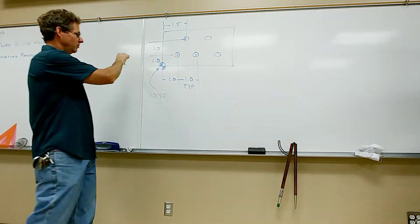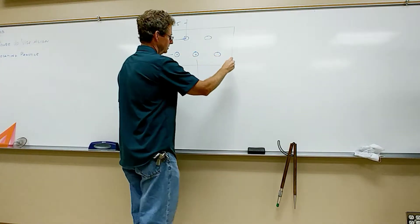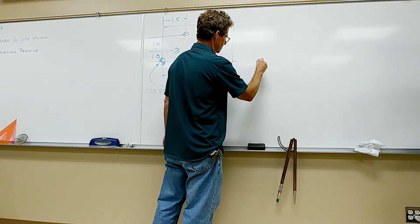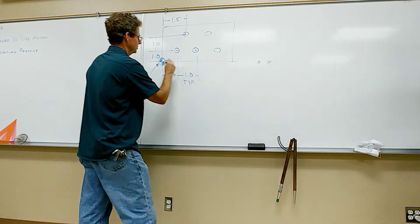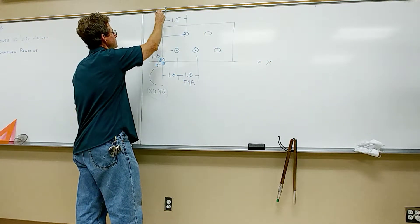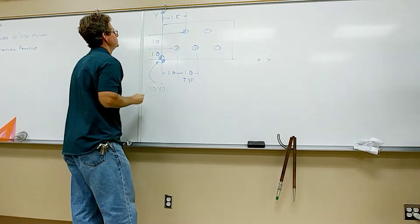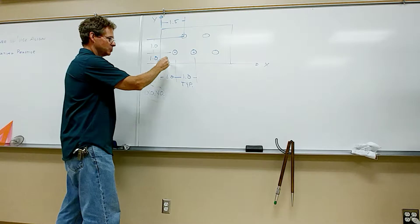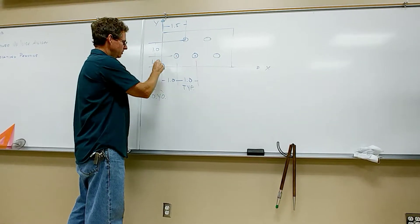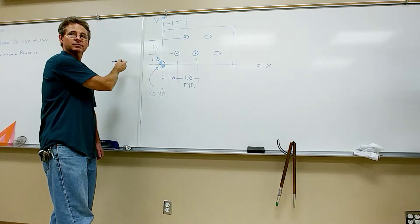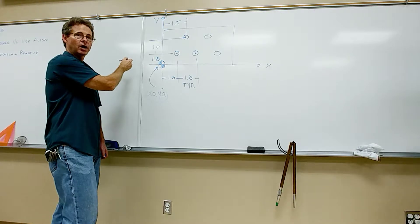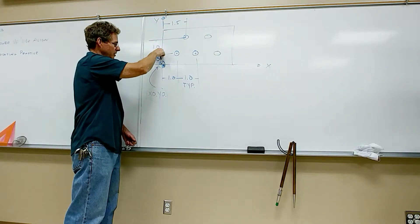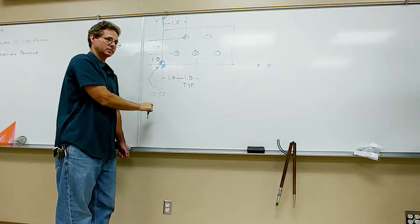So as we look at this, we have our x-axis, right? We have our y-axis, this is our origin, everything on this side is plus x, everything on this side is minus x, right? When I look at my y-axis, everything is plus y, everything down here is minus y.